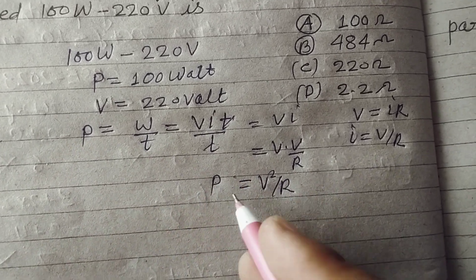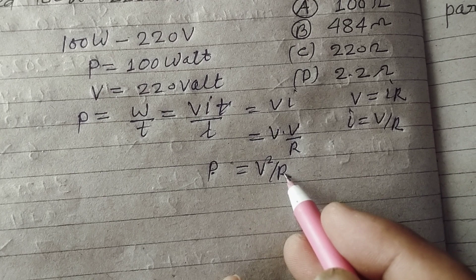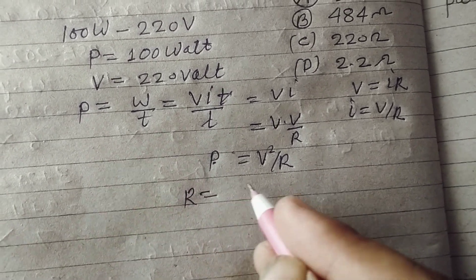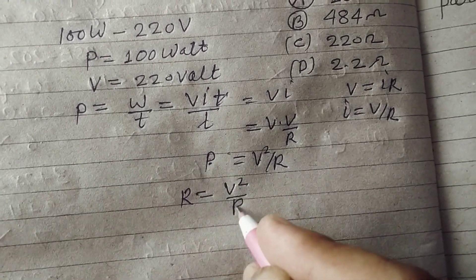So this is the relation between power, voltage and resistance. Therefore resistance is equal to V square upon P.